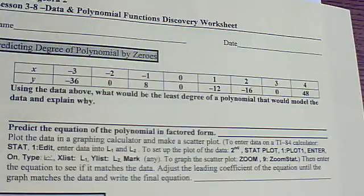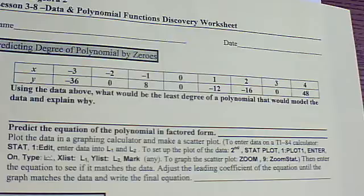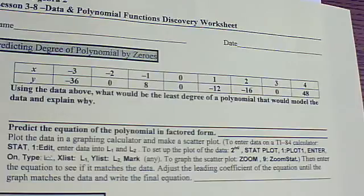In this investigation, we're going to be going the opposite way. We're going to have tables of data, and we're going to be trying to figure out what type of polynomial we get, maybe even the equation, depending on what we have. We have a table of data, and we'd like to try to figure out at least what kind of degree it would be.